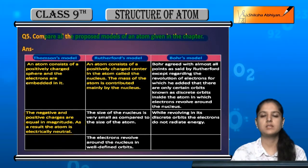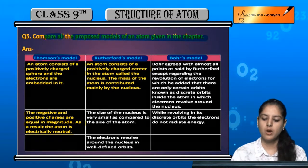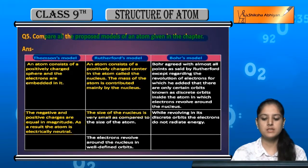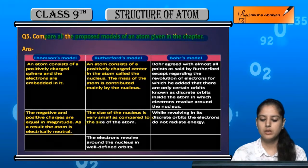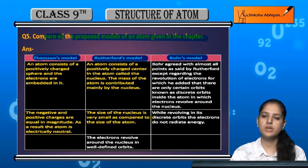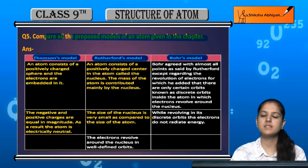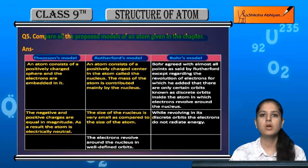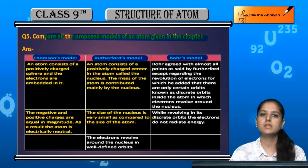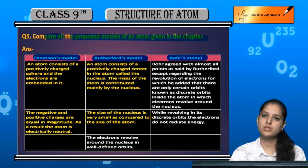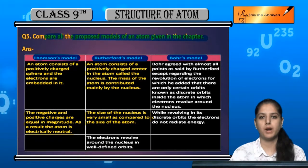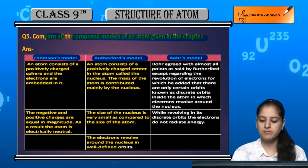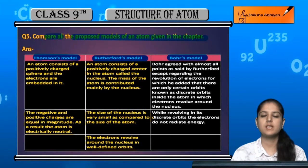Rutherford's model also stated that the size of the nucleus is very small as compared to the size of the atom. There is a very big difference in size between the nucleus and the atom, where the nucleus is small and the atom is very large. And the electrons revolve around the nucleus in well-defined orbits.